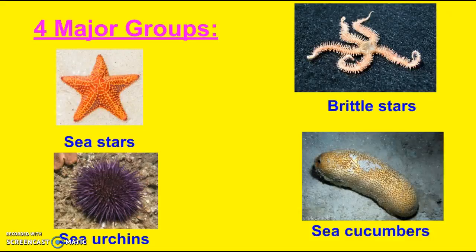When it comes to echinoderms, there are four major groups: sea stars, brittle stars, sea urchins, and sea cucumbers.